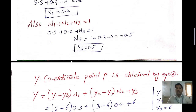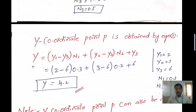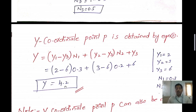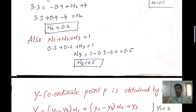Now we need to find the y coordinate at the interior point using equation 2: y = (y1 − y3)·n1 + (y2 − y3)·n2 + y3. Substituting y1=2, y3=6, n1=0.3, y2=3, n2=0.2: y = (2 − 6)·0.3 + (3 − 6)·0.2 + 6. Adding all values gives y = 4.2. So n2 = 0.2, n3 = 0.5, and y coordinate = 4.2.